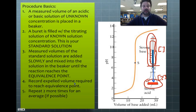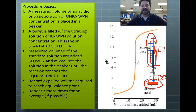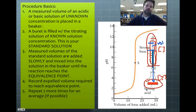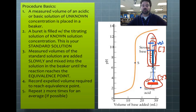Record the expelled volume required to reach the equivalence point — subtract your starting burette reading from your ending reading to get the exact volume used. Titrations are usually done in triplicate: repeat the process three times and average the results so you have a reliable value to report.